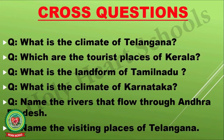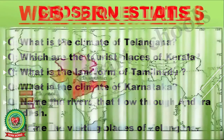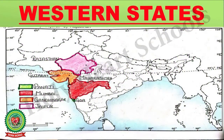Children, I hope you are able to answer these questions. Now, today I am going to discuss Western states. Children, there are 4 Western states: Goa, Maharashtra, Gujarat and Rajasthan.